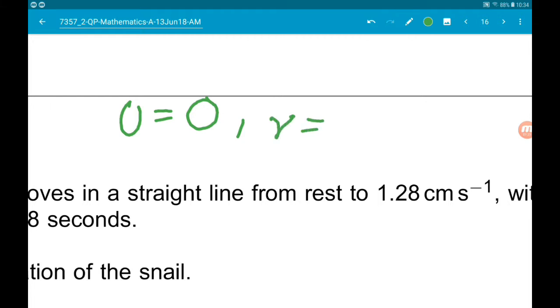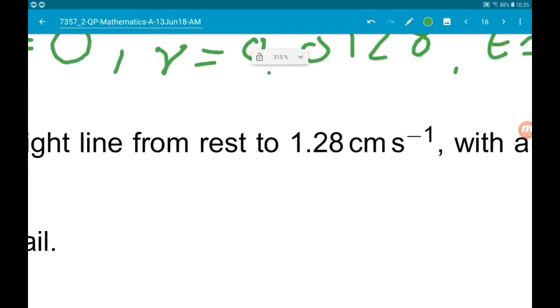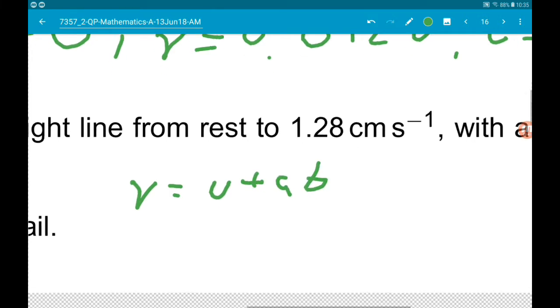So that's 0.0128, and we know t is 1.8. Now if v is u plus at, we can rearrange that to get a equals v minus u over t.